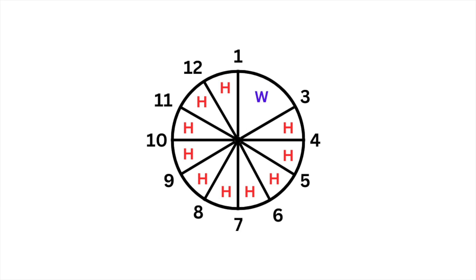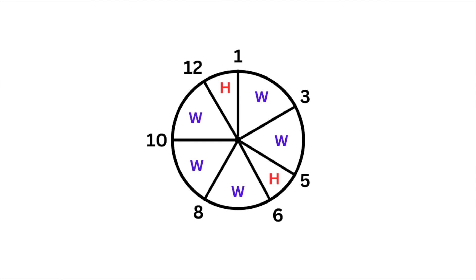But today we're talking about the major scale, which has the pattern: whole, whole, half, whole, whole, whole, half. So in order to create this pattern, we have to remove some of the notes from the chromatic scale. We then re-number the remaining notes in order to give us the seven-tone scale that is the basis for most of Western music.